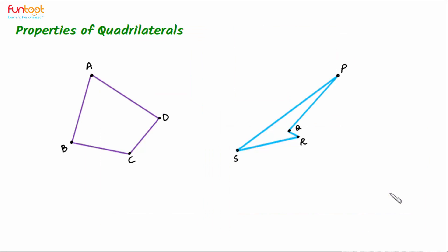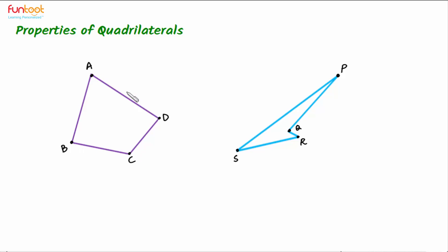Now let's discuss properties of quadrilaterals. A quadrilateral is a plane closed figure bounded by four straight lines forming four sides. In quadrilateral ABCD, AB and AD are adjacent sides, and similarly BC and CD are adjacent sides.